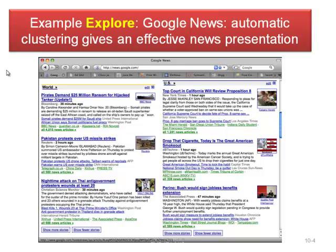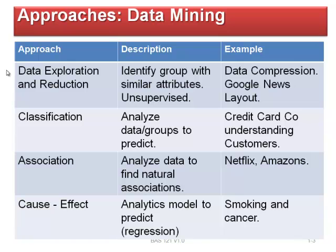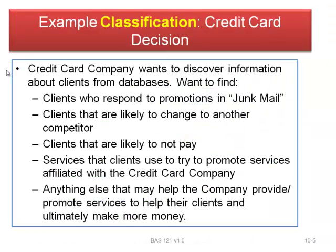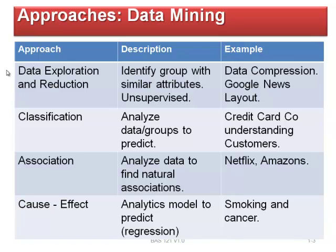They cluster it so it's more manageable — all world articles are together, all U.S. articles are together, etc. The second kind is called classification, where we're trying to analyze different groups and use them to predict. Do these people tend to throw away junk mail or keep it? Credit cards use this a lot — who's going to respond to a promotion, who's likely to change to a competitor, high-income or low-income, young or old? You're classifying into different categories to help make decisions. Because we're making decisions, this is supervised data mining — we're trying to find a dependent variable.